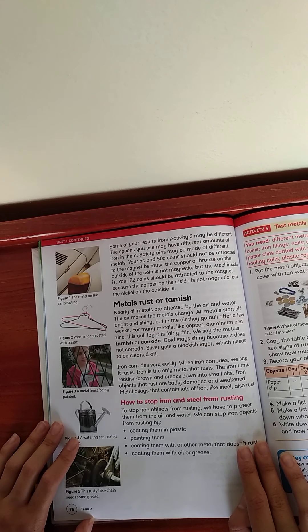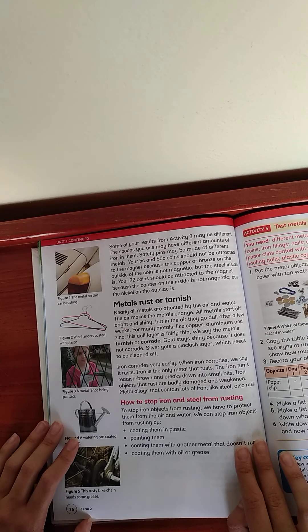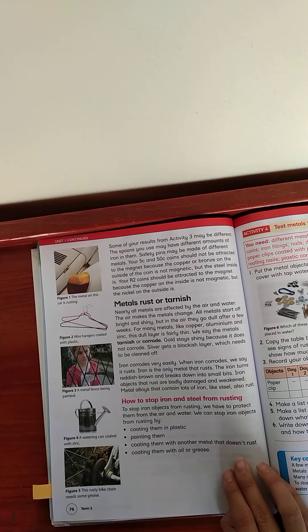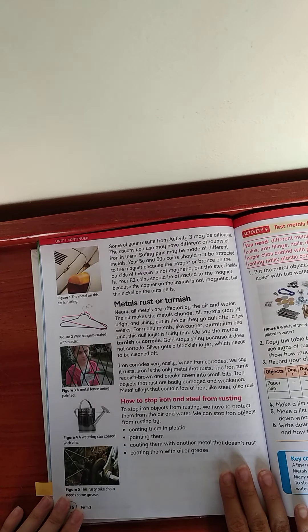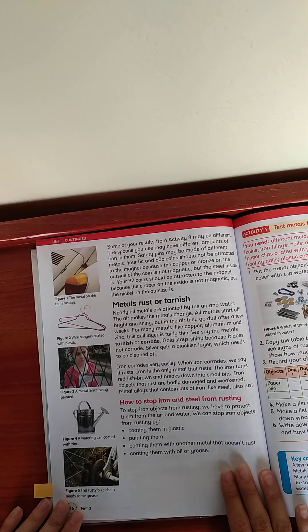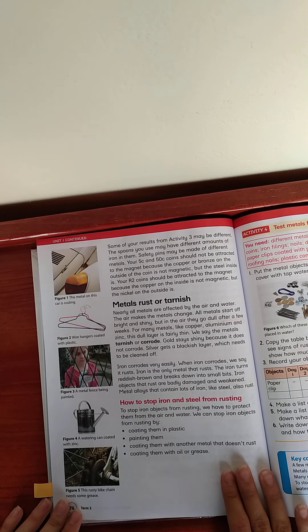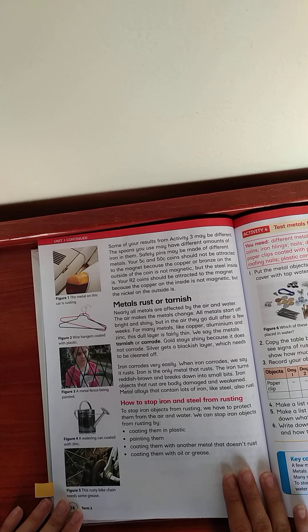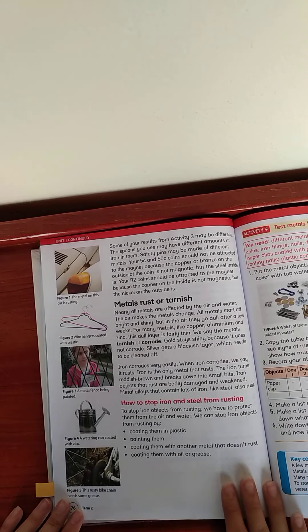Iron corrodes very easily. When iron corrodes, we say it rusts. Iron is the only metal that rusts. The iron rusts reddish brown and breaks down into small bits. Iron objects that rust are badly damaged and weakened. Metal alloys that contain lots of iron like steel also rust. How to stop iron and steel from rusting? To stop iron objects from rusting, we have to protect them from the air and water. We can stop iron objects from rusting by coating them in plastic, painting them, coating them with another metal that doesn't rust, or coating them with oil or grease.